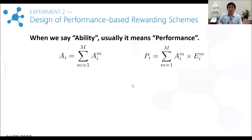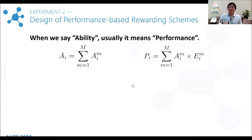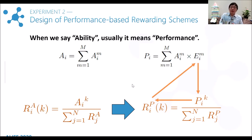However, there is an issue. When we talk about the evaluation of student ability, we usually talk about the evaluation of his performance — even if that is the score of an IQ test. So, in the second part of the experiment, we replace the original ability-based scheme with a performance-based scheme. The interplay becomes more complex: performance decides the rewards, rewards decide the engagement level, and the engagement level decides the performance.